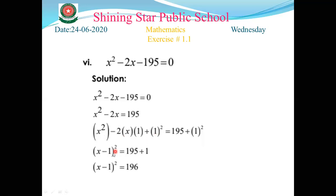The fourth step: close the formula. Since the middle term is negative, we use (a - b)² = a² - 2ab + b². Here a is x and b is 1, giving (x - 1)² = 195 + 1 = 196.